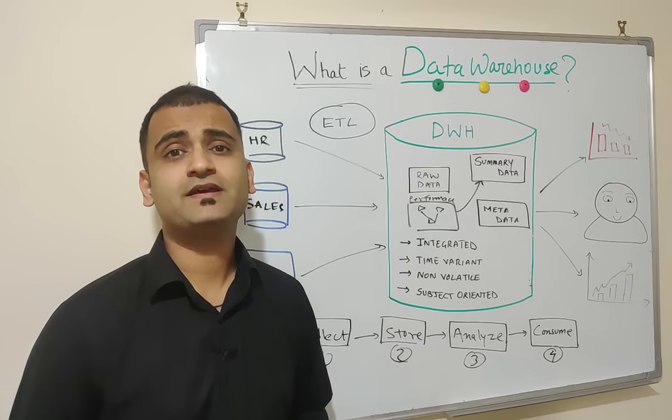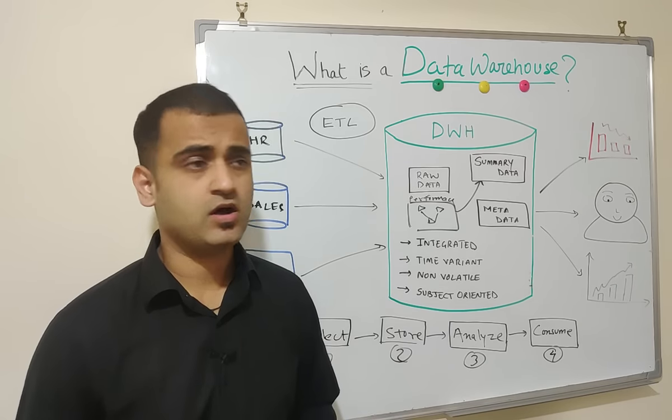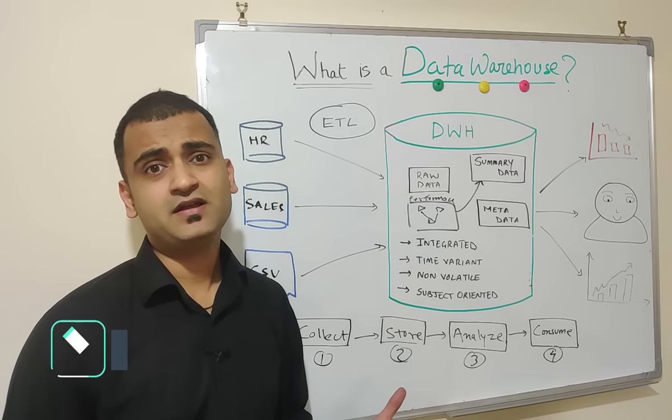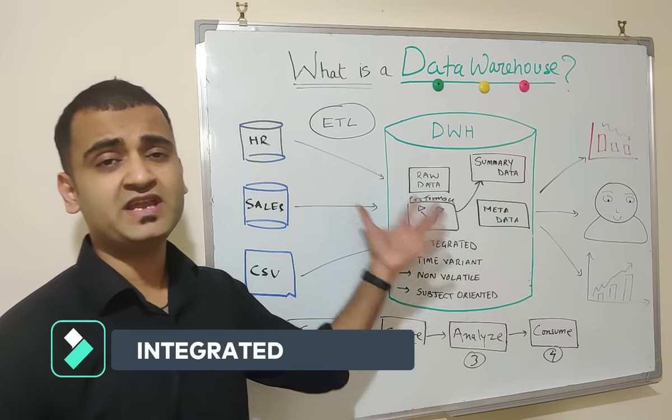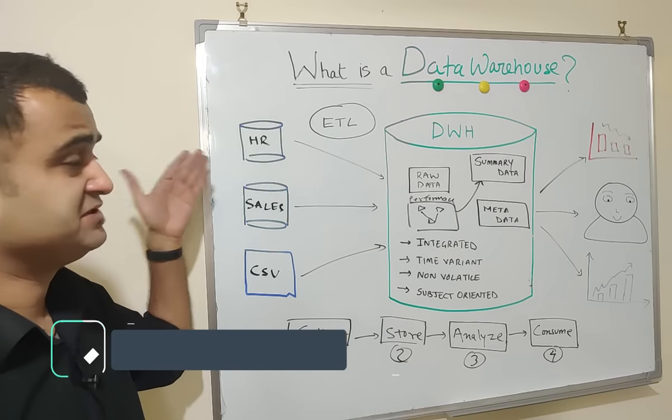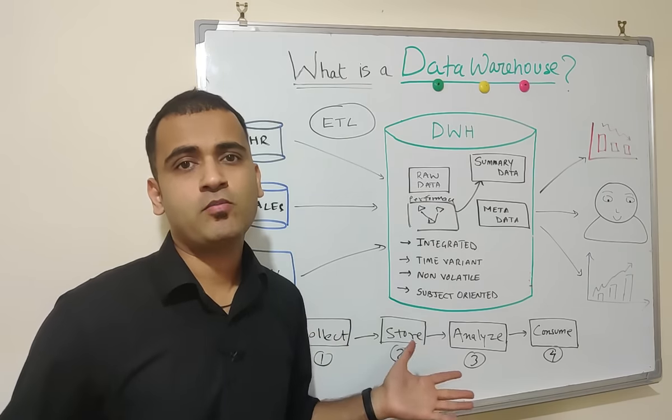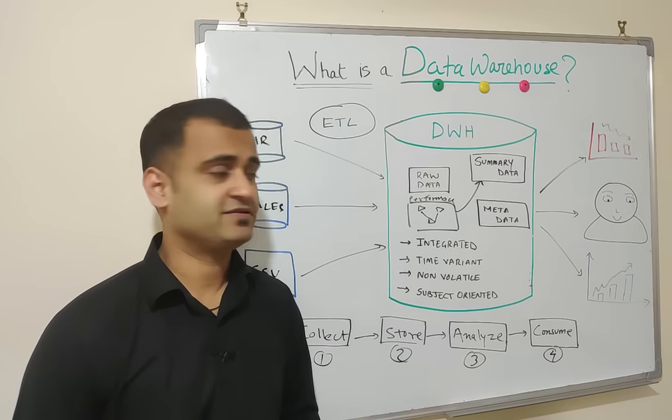So now quickly understand some basic characteristics of a data warehouse. First one is integrated. As the name suggests, integrated means data warehouse enables you to integrate the data coming from various systems in a common format and that helps you in further analysis.